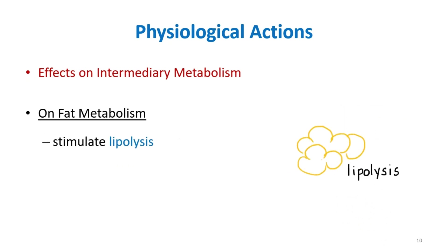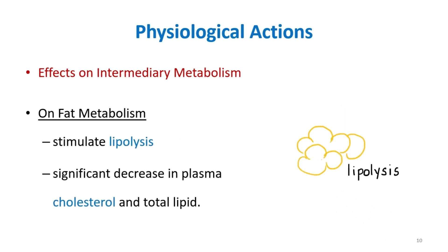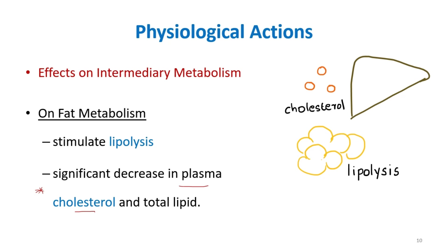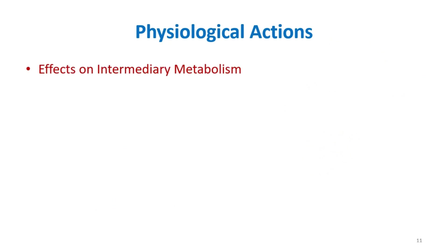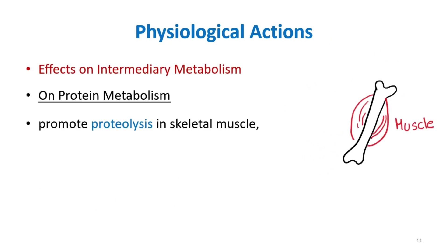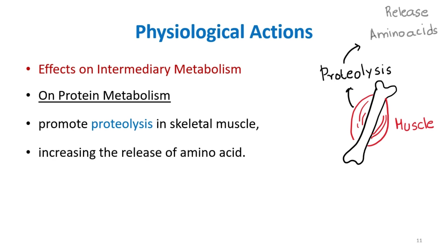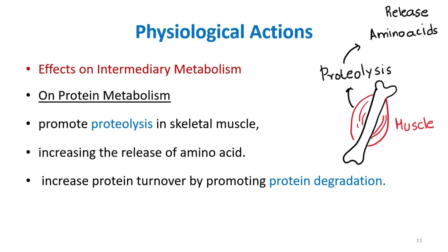On fat metabolism, thyroid hormone stimulates lipolysis and causes a significant decrease in plasma cholesterol level. It acts on liver cells to increase LDL receptors, so cholesterol in the blood is taken up by the liver, decreasing blood cholesterol. On protein metabolism, it stimulates proteolysis in skeletal muscles, causing more release of amino acids and increased protein turnover by promoting protein degradation.